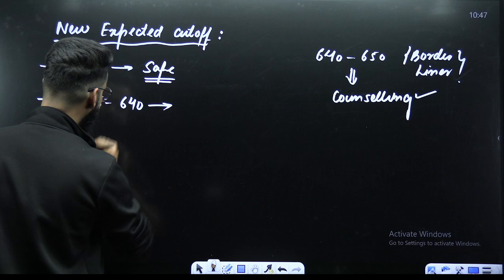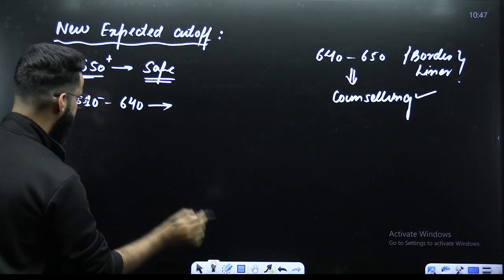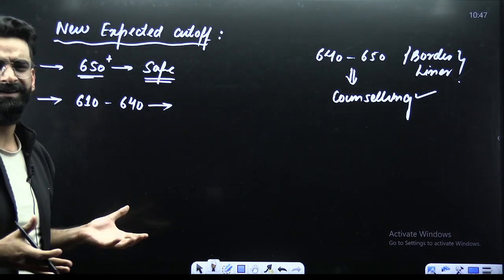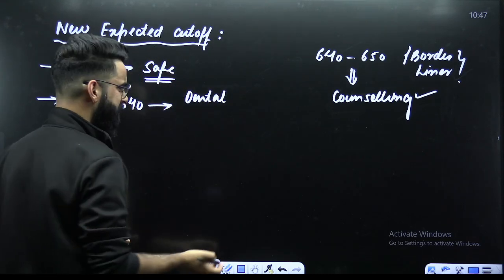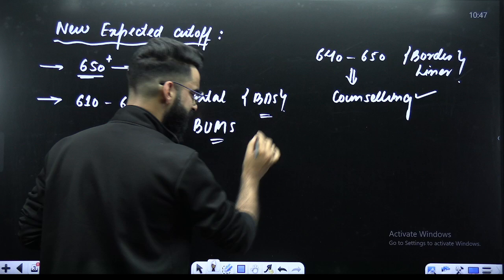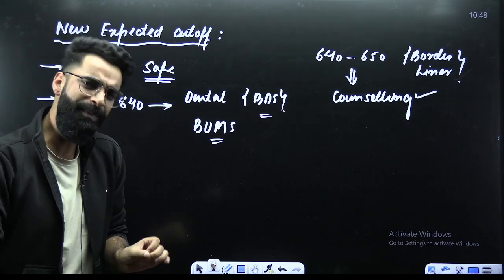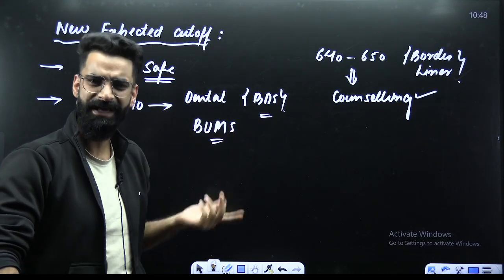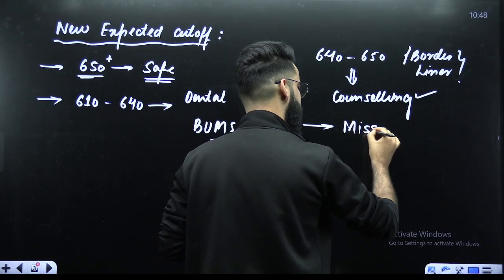Now let me write 610 to 640. Now all these students who come in this particular category, my dear students, through NEET there are some other courses as well, you know it. Dental courses are there, which you call as BDS, BUMS, etc. What my suggestion will be? My suggestion to all those students who are scoring between 610 to 640, you will be getting some of the college, but not for MBBS. You can get the seat into the BDS category, BUMS category, BAMS category. I strongly suggest my dear students, do not miss this opportunity. Do not miss it.